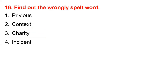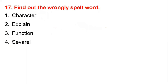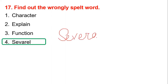Number sixteen: find out the wrongly spelled word — previous, context, charity, incident. Previous means prior context. Number seventeen: wrongly spelled word — character, explained, function, several. The answer is 'several'.